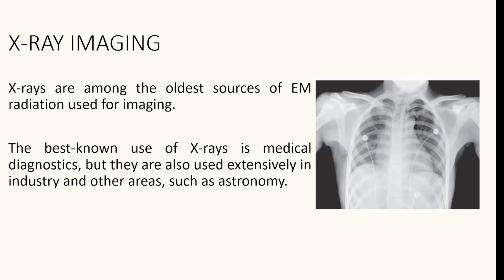X-rays are the oldest source of electromagnetic radiation used for imaging and are majorly used for medical diagnostics. X-rays are generated using an X-ray tube, which is a vacuum tube with a cathode and anode. When the cathode is heated, it releases free electrons that flow at very high speed to the positively charged anode. When electrons strike a nucleus, energy is released in the form of X-ray radiation. The figure here shows a chest X-ray.